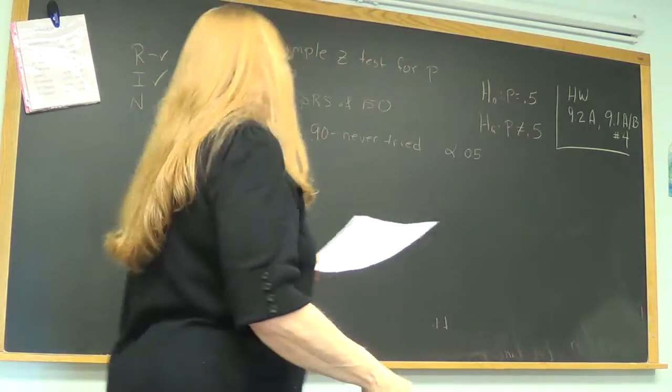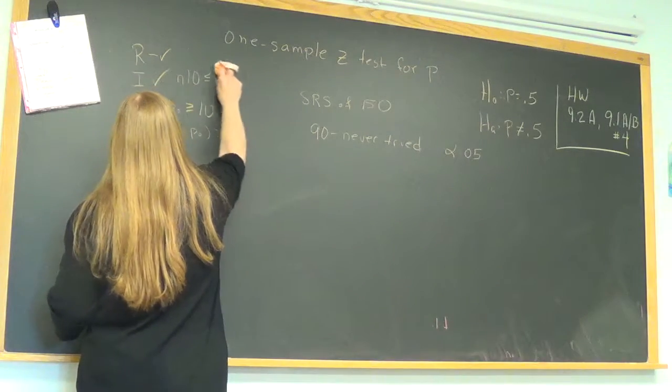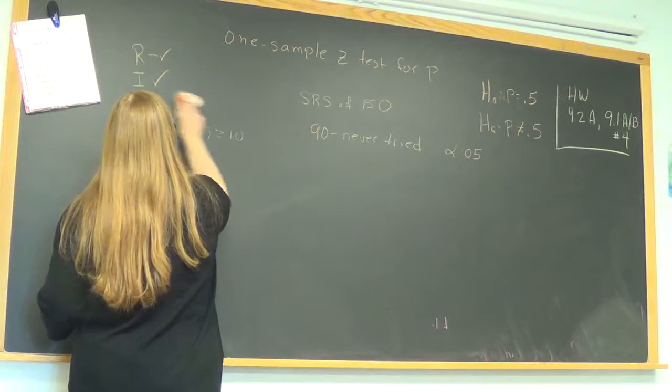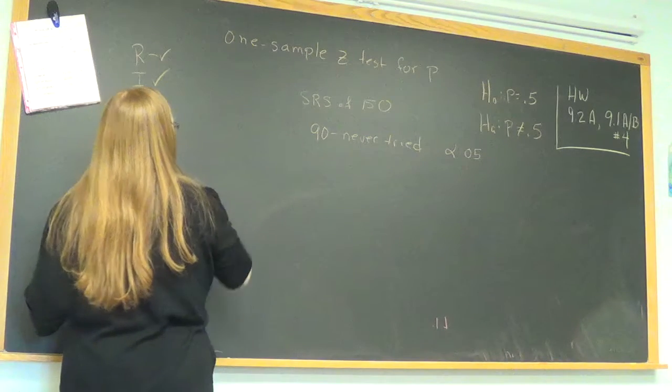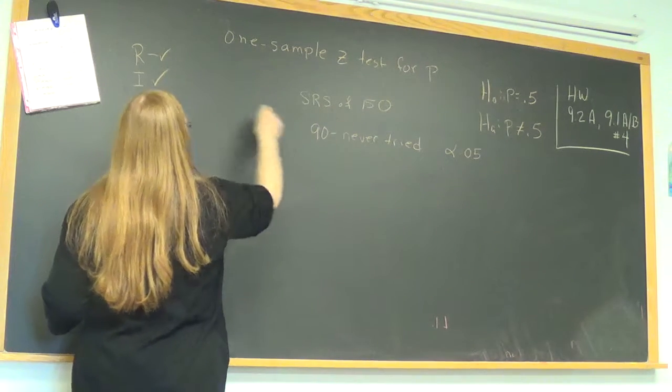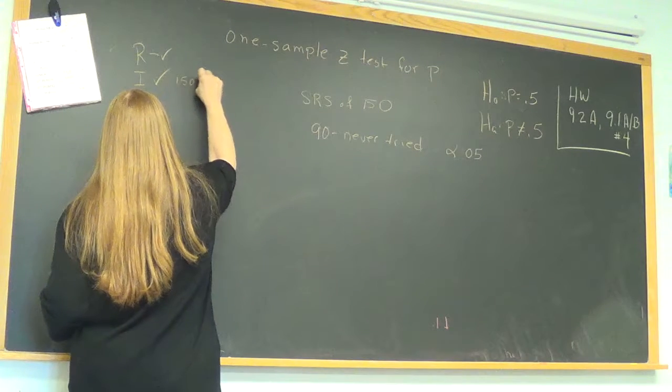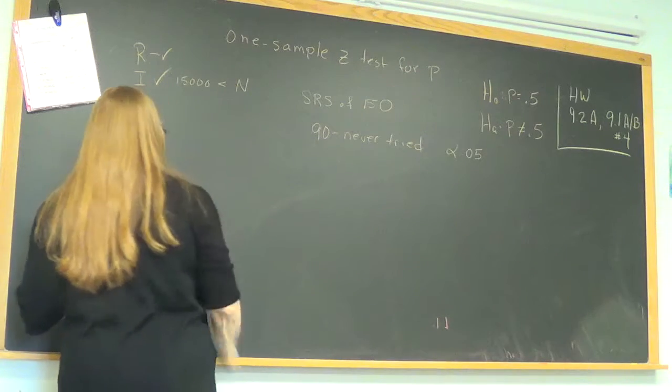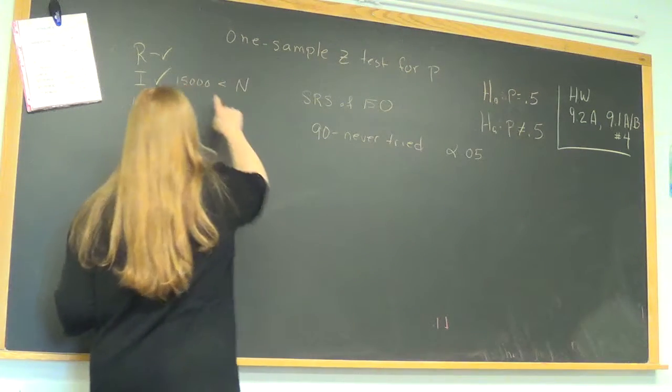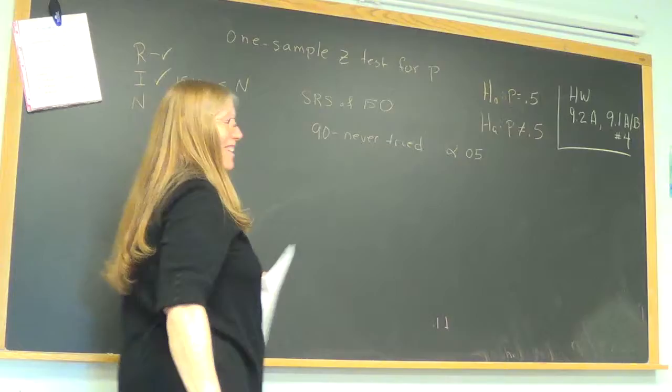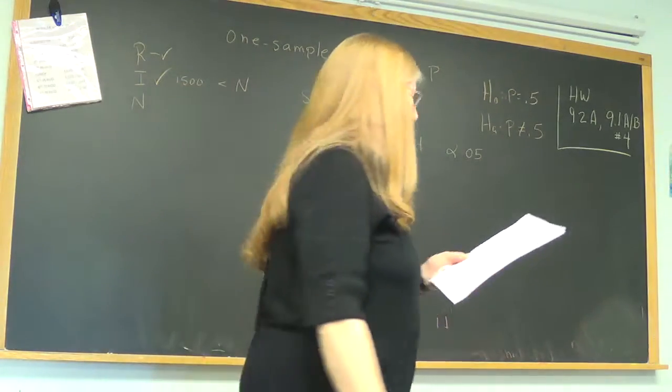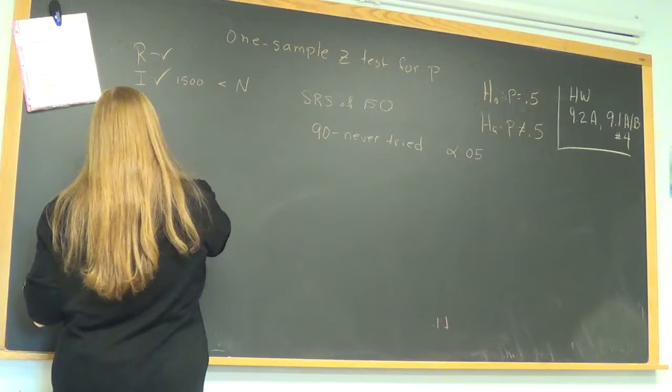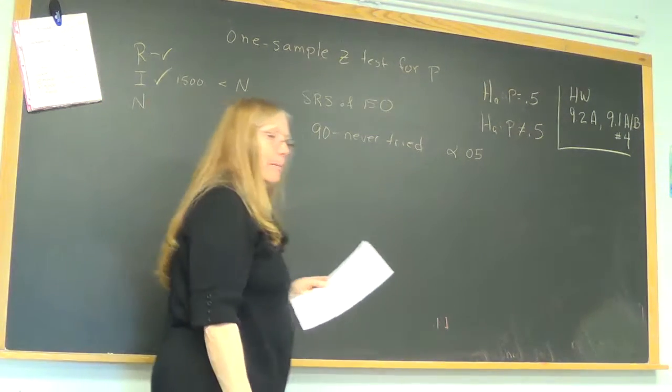So P-naught or H sub O equal to 0.5 and we are challenging it for a large high school. We're going to go in and take a survey. We're not sure if it's higher or lower than 50%, but we don't think it's 50%. So I'm going into a high school and I'm taking an SRS of 150 students. That's my N. And 90 say they never tried those cigarettes. So we're going to conduct a test against the alpha significance level of 0.05 again.